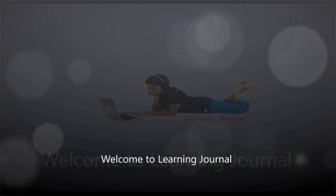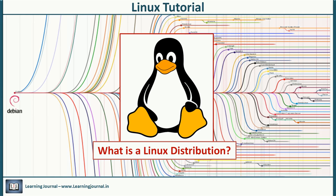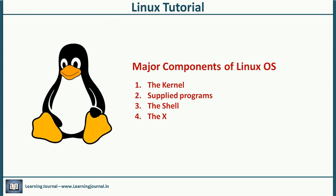Hello and welcome to Linux tutorials at Learning Journal. A Linux distribution, or distro, is a packaged Linux operating system. There are four major components of a Linux operating system, and we have multiple options or customizations for each of these four parts. So different vendors will choose appropriate components and package them as an installable distributable bundle — that's what we call a Linux distro.